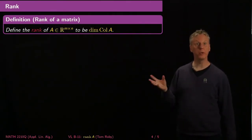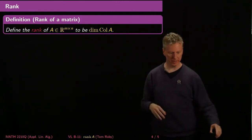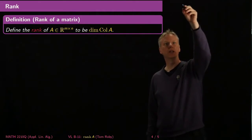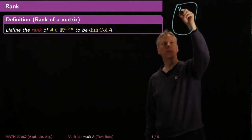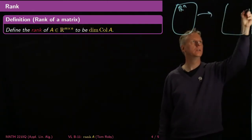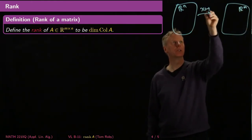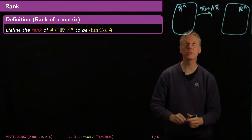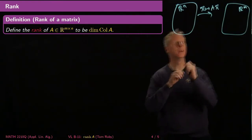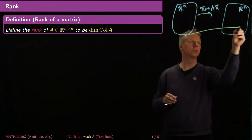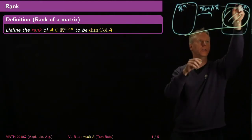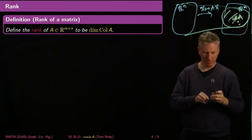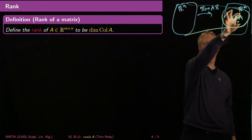Now that we've seen how row operations affect the row space, we'd like to define the rank of a matrix. I'm going to define it to be the dimension of the column space of A. Always keep in mind the basic picture: a linear transformation from R^n to R^m given by x maps to Ax. The column space is the range of this linear transformation — the set of all places that everything gets mapped to, which may or may not be all of R^m. The rank is just the dimension of that range.